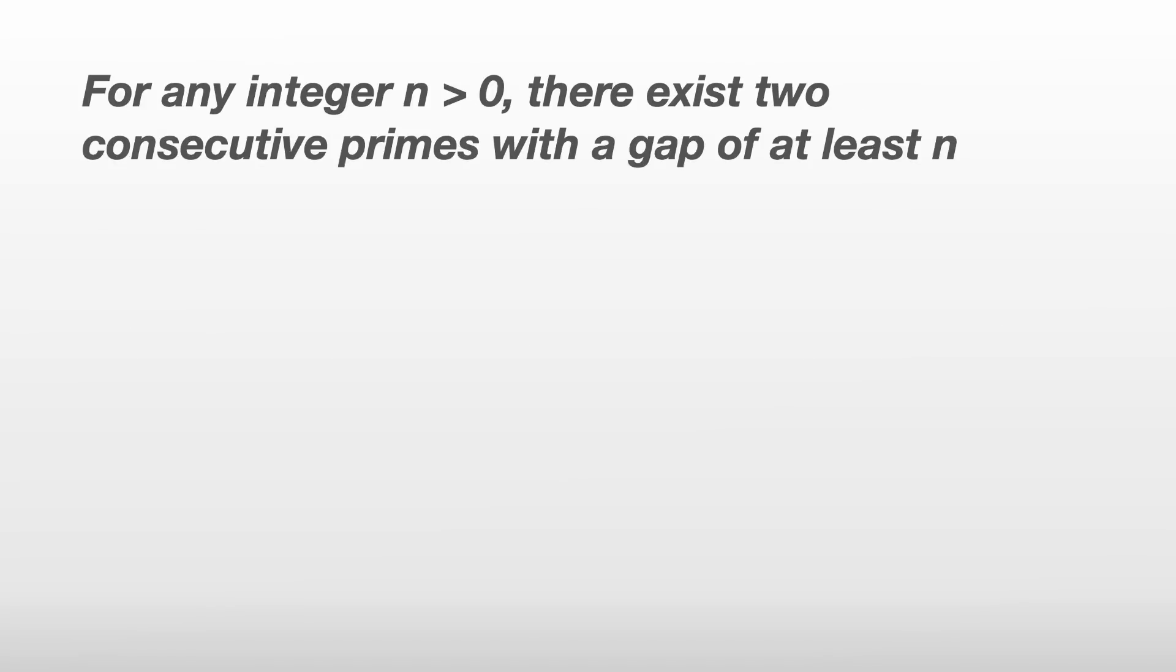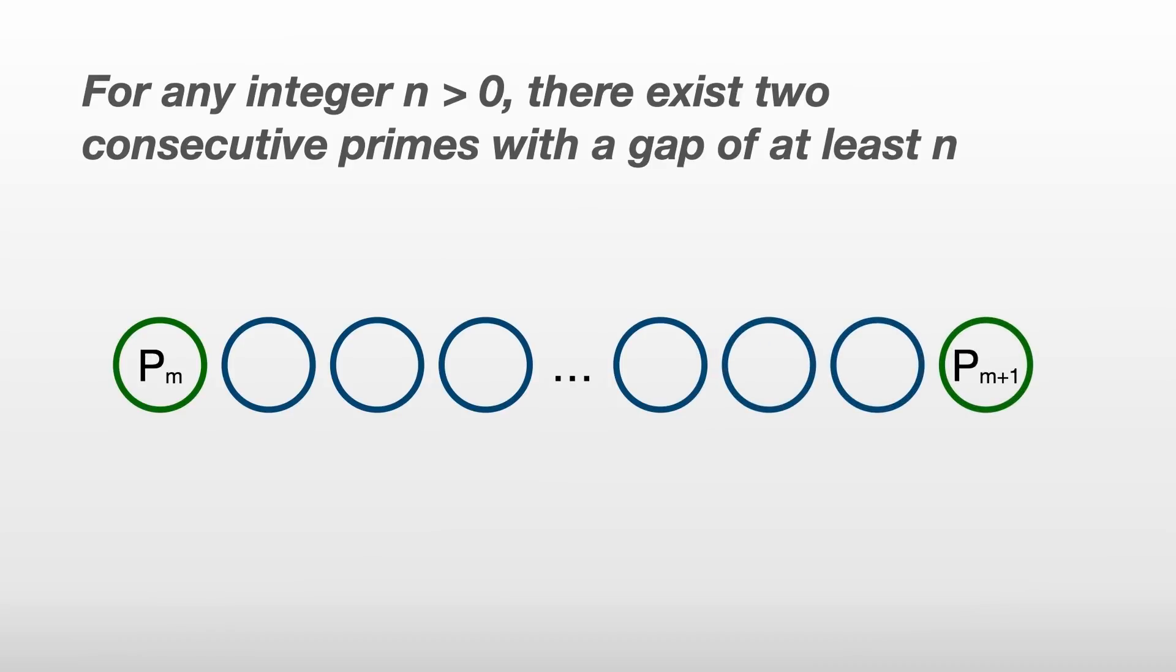Now, back to our original problem. For any integer n greater than 0, there exist two consecutive primes with a gap of at least n. Well, since we've proved that there exist at least n consecutive composite numbers, the primes on either side of these must be separated by at least n. And there's our proof.